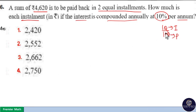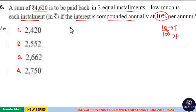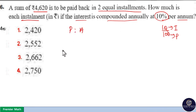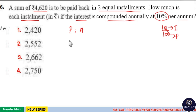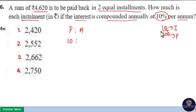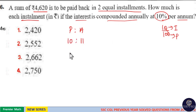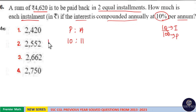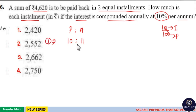Take the ratio of principle and amount. Principle is 10 parts and amount is 10 plus 1, which is 11 parts. You can see this is for 1 year.